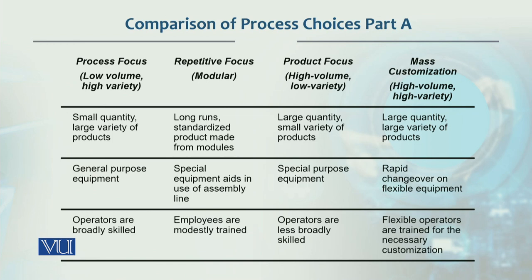In process focus, you produce a large variety but in small quantity. The variety will be very large — different products are produced in the facility — but the quantity will be small. As in a hospital, there are different varieties of patients treated, each variety is individual. The variety is very large, but in every variety the number is very small — in some cases almost one.